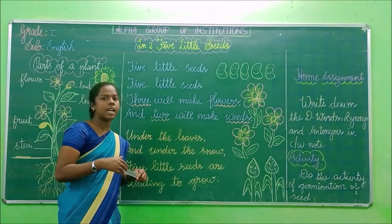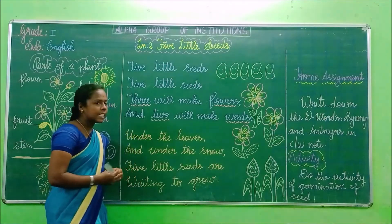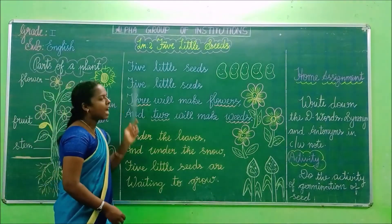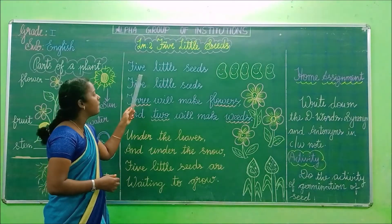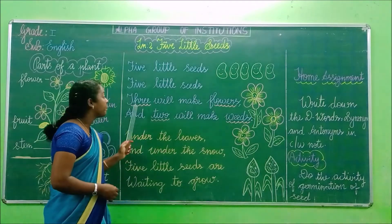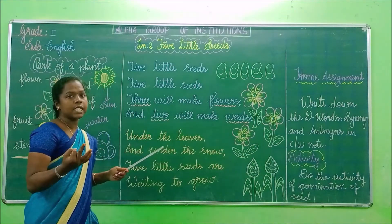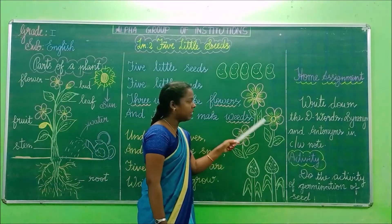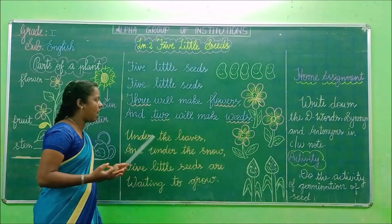There are five little seeds. These five little seeds are waiting to grow. Five little seeds — that's why they said five little seeds. Three will make flowers. So three seeds will make into flowers. See here: one, two, three — three seeds will make into flowers.